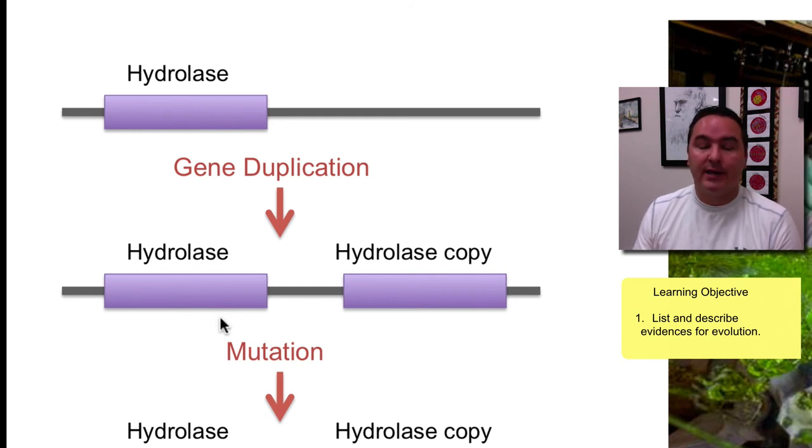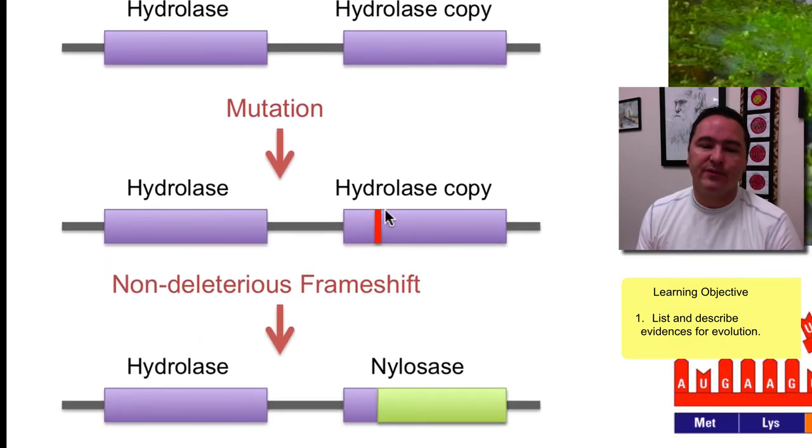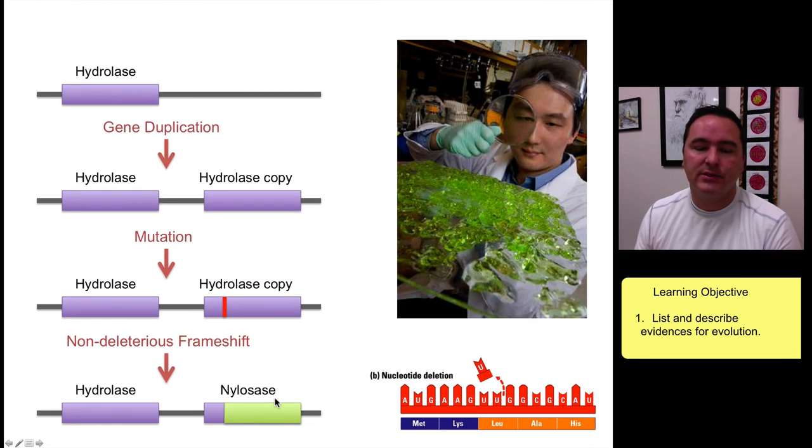They looked at the genes of this bacteria, and this bacteria had a gene called hydrolase. Most bacteria have this gene as well. What had happened is this hydrolase gene had copied itself. You don't need two copies of hydrolase, so one copy was free to receive mutations. As these mutations accumulated, one mutation happened that actually produced a new gene with a new function: an enzyme called nylonase that could break down the byproducts of nylon.